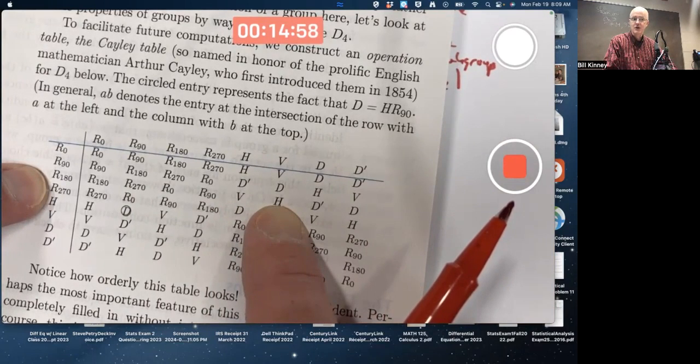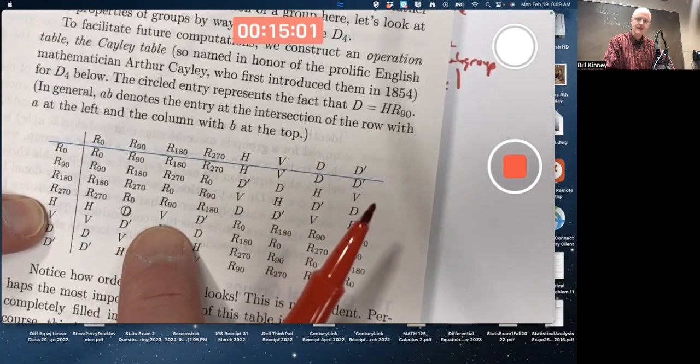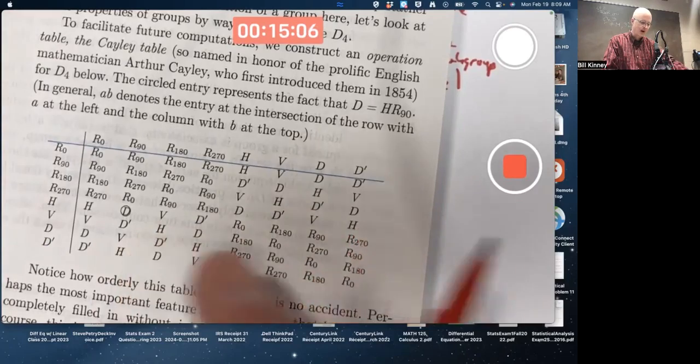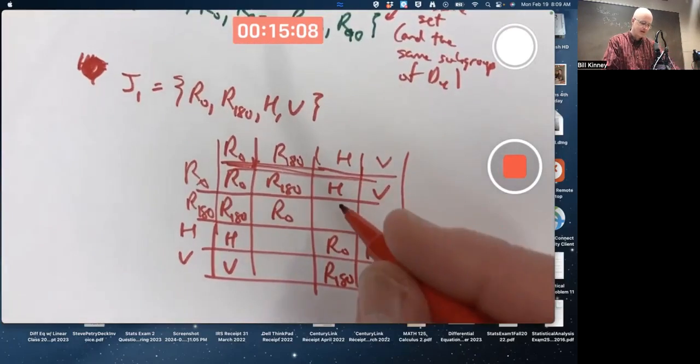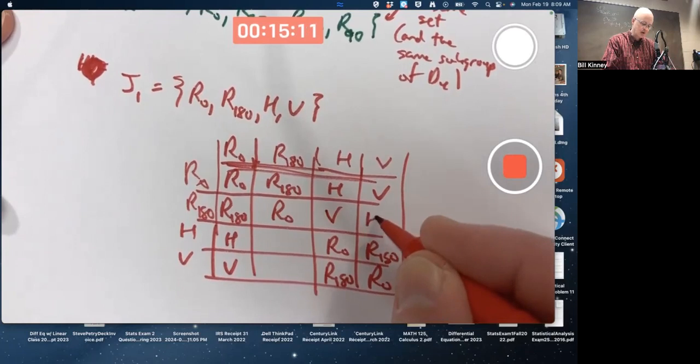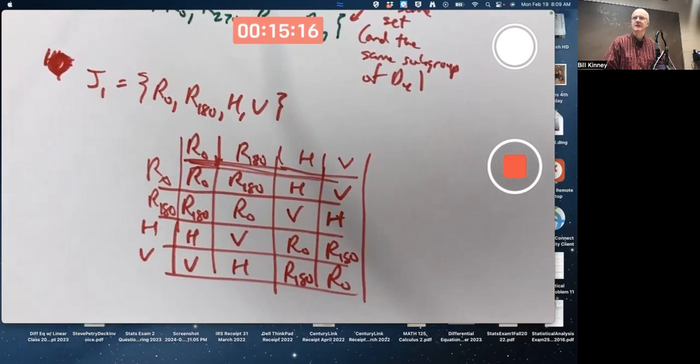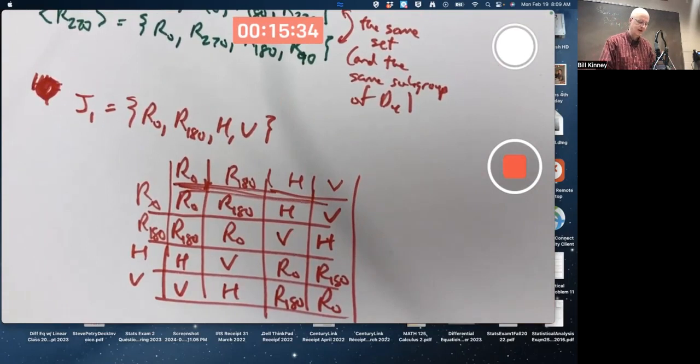And R180 composed with V is H. And it works the other way around, too. H composed with R180 is V. V composed with R180 is H. So we are staying within this set under composition. It is closed under the operation of function composition. You can make a Cayley table like this and argue that because of this, it's closed.